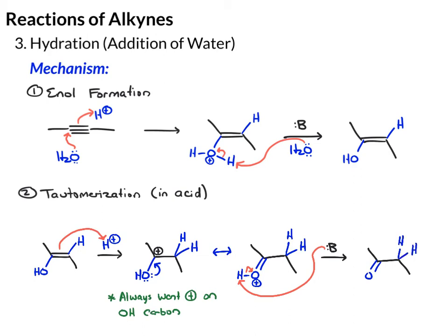These hydrogens are drawn in explicitly, but you can obviously leave them implied. The byproduct, if you want to draw it, is just the protonated base, HB⁺. To be most accurate, up in the earlier step we protonated water as the byproduct and regenerated acid, H₃O⁺.